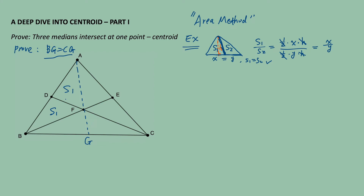I'm going to assume the area of triangle ADF is S1. Following the similar logic from our example, triangle BDF also has the same area S1. The reason is: these two triangles have equal bases AD and BD, because CD is one of the medians and D is the midpoint. Secondly, if you draw an altitude from point F towards side ADB, this altitude is the common altitude of both triangles. For triangle AEF, if we assume the area is S2, then triangle CEF also has the same area S2.